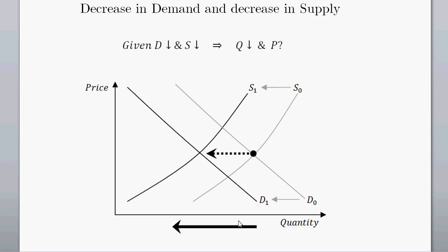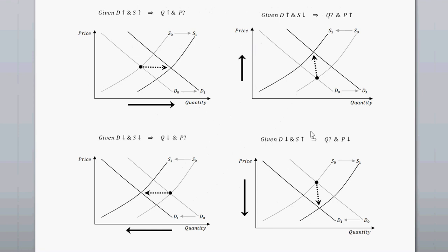To summarize, we have all four cases in a chart. When demand increases and supply increases, quantity is going to increase but the effect on price is ambiguous — it could be up, down, or the same. In all cases, the outcome depends on how big the shifts were — whether it's a large or small shift — and also the slope of the curves, meaning the elasticity of these curves.